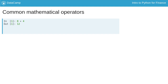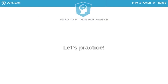Similarly, if you want to divide 8 by 4, you would use the division operator — that is the forward slash — to obtain the result of 2. Now that you've learned about the IPython interface and scripts, let's practice writing your first Python commands and getting more familiar with the DataCamp interface.